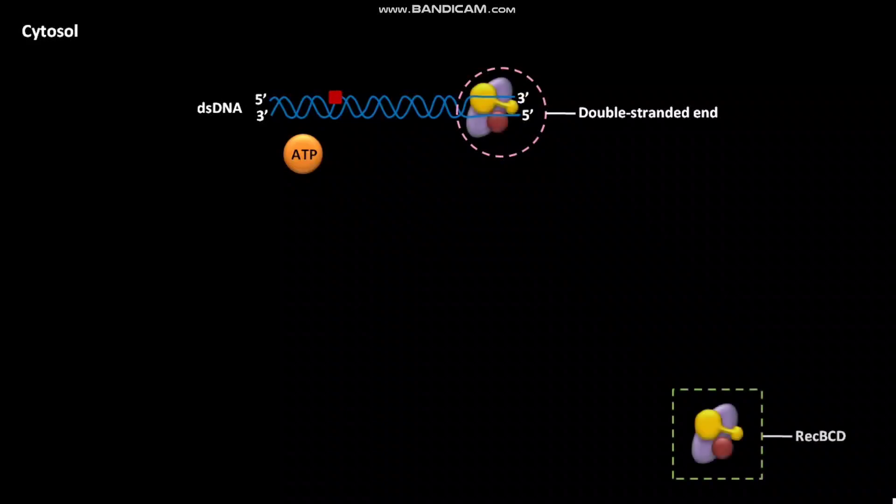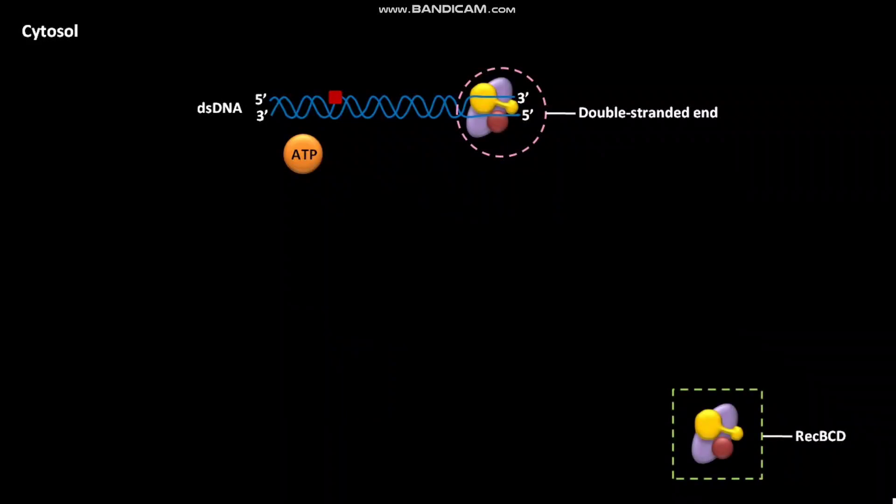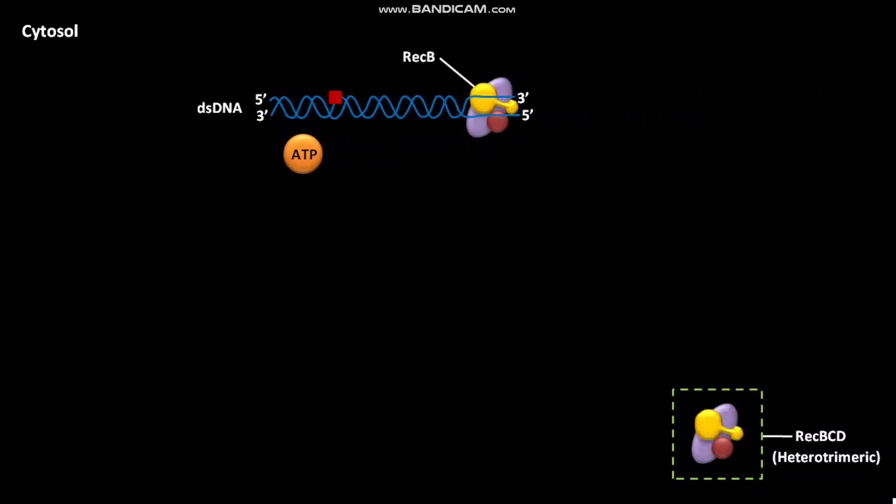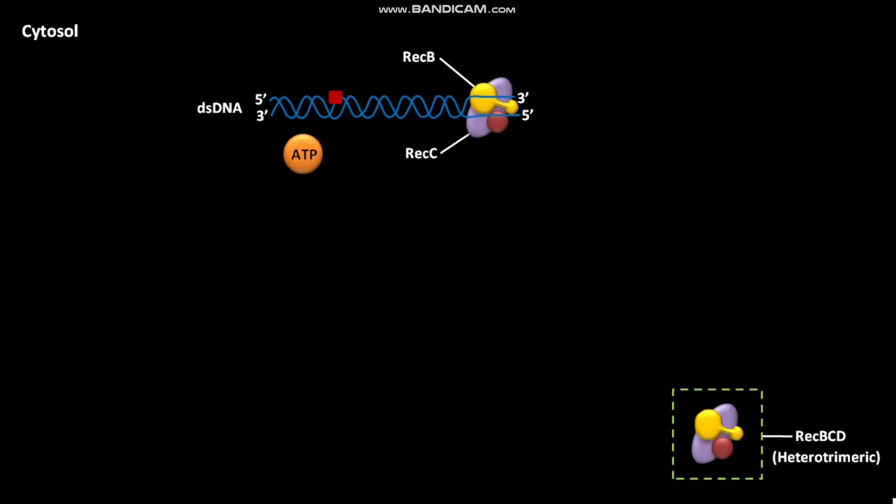The enzyme REC-BCD is heterotrimeric in nature. The enzyme REC-BCD is composed of three subunits like REC-B subunit, REC-C subunit, and REC-D subunit.